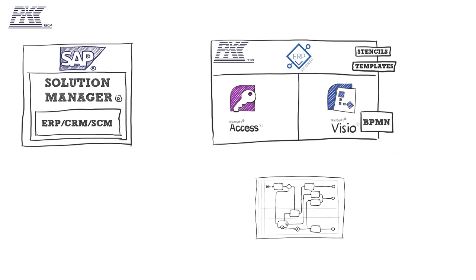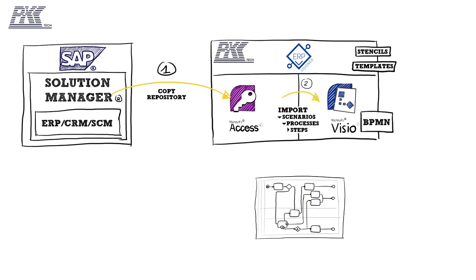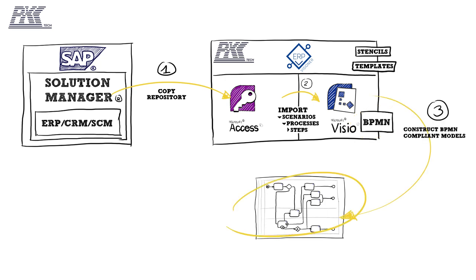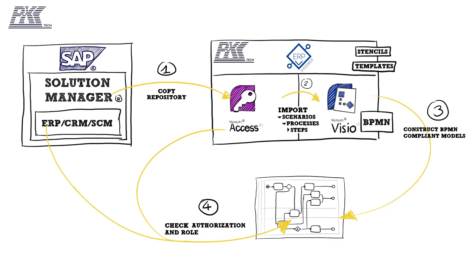How does it work? Simple. With ERP Visioner, you copy the implemented business processes from any repository — for example, SAP Solution Manager — to Microsoft Access. Now you have an easily accessible and portable business process repository that you can connect with Microsoft Visio. ERP Visioner combines this data with the BPMN standard and lets you create BPMN-compliant models in Microsoft Visio in a highly automated way. And that's not all — ERP Visioner also checks the authorisation and roles from your client's ERP system, so now you can validate your models in the blink of an eye.